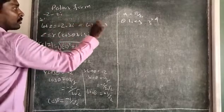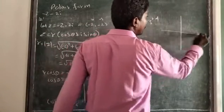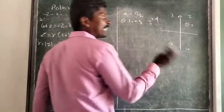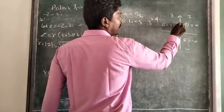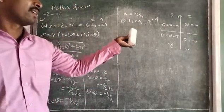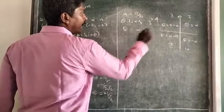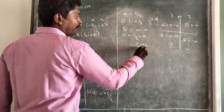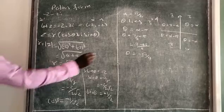Minus 2, minus 2 — that is x and y. So theta lies in the third quadrant. Please always remember the quadrant conditions: in the first quadrant, θ = α; in the second quadrant, θ = π − α; in the third quadrant, θ = α − π; in the fourth quadrant, θ = −α or similar. These are important to apply after finding alpha.